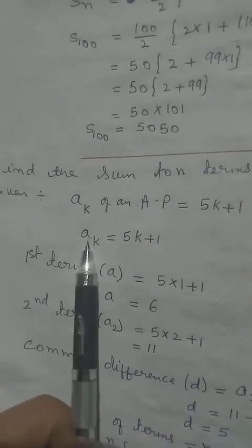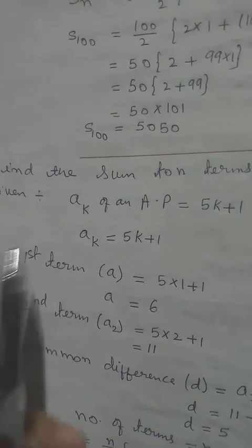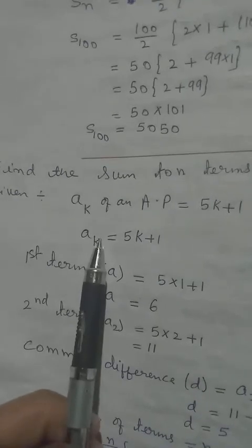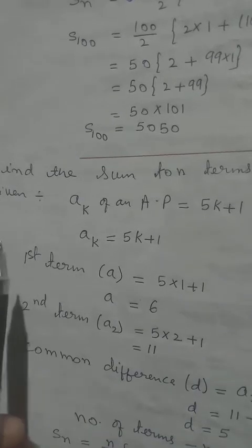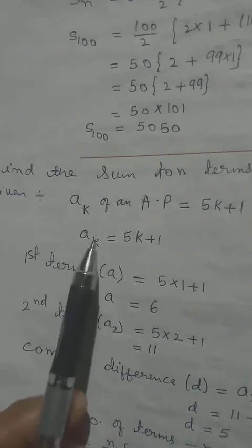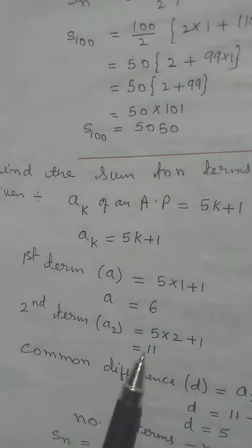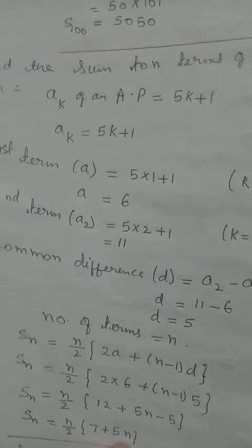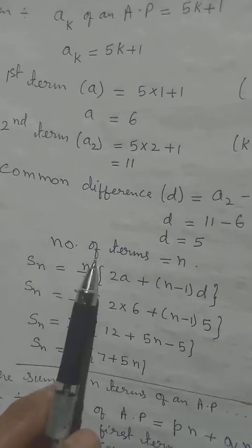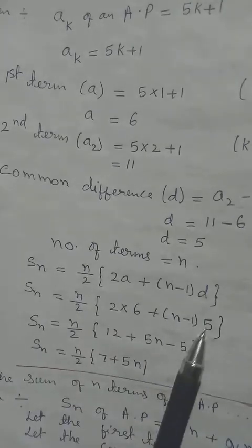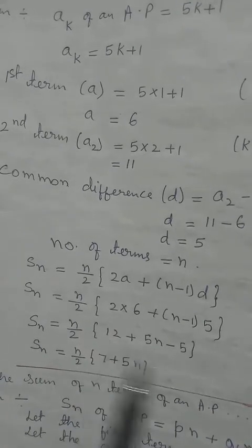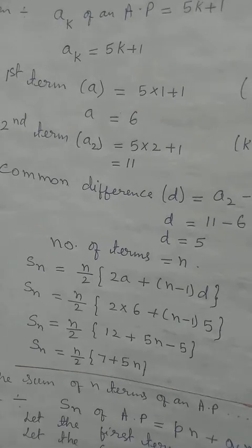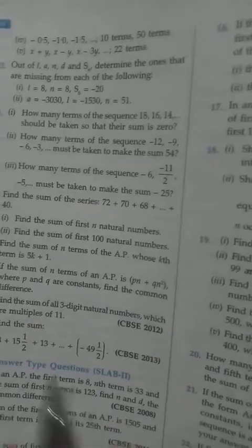To find A_K, we find the first and second terms. Putting K = 1: S_1 = 5(1) + 1 = 6, so the first term A = 6. Putting K = 2: S_2 = 5(2) + 1 = 11. But S_2 includes both terms, so second term = 11 − 6 = 5. Common difference D = 5 − 6... wait, D = second term − first term needs rechecking; using S_N formula: S_N = N/2 × [2(6) + (N−1)(5)] = N/2 × (12 + 5N − 5) = N/2 × (7 + 5N).